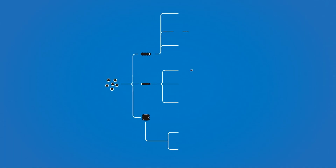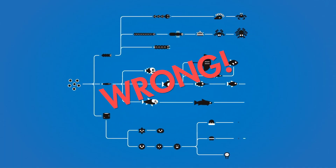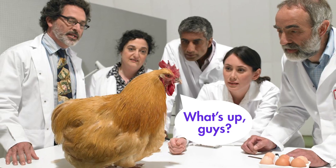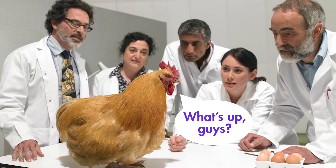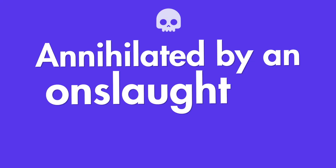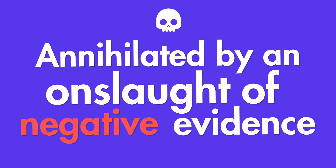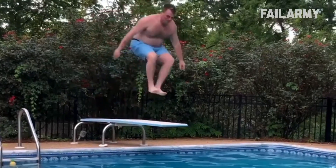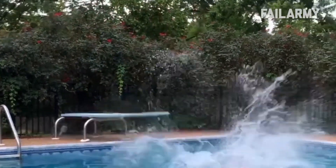Darwin's Tree of Life is most likely not a description of how life on Earth emerged and diversified. I know that's a shocker, and yet some scientists go as far as to say that the Tree of Life has actually been annihilated by an onslaught of negative evidence. Join me for this video to find out why one of the most popular arguments for Darwinian evolution may actually be a non-starter.